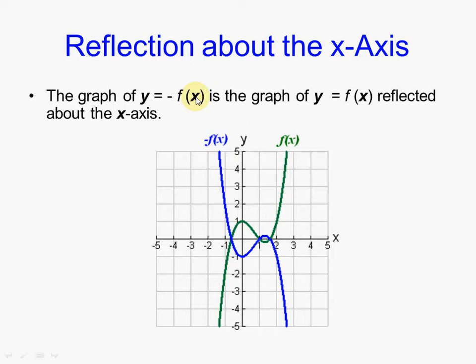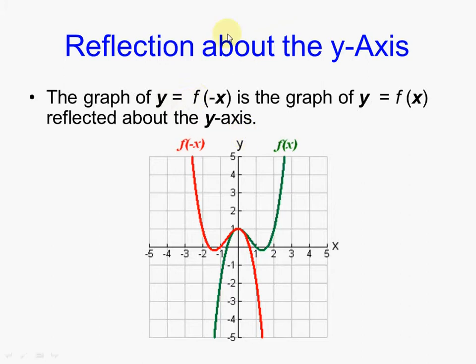However, if you have a negative within the function — so not on the outside around all of the function, but instead it's right inside the parentheses right next to the x, the x alone — that's a reflection around the y-axis.